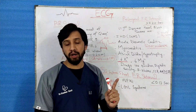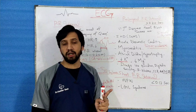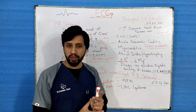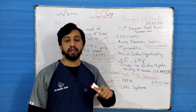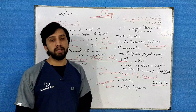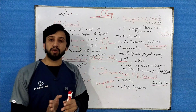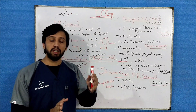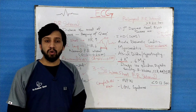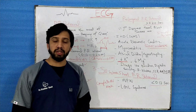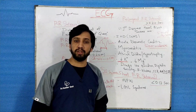To summarize, we discussed the PR interval, its normal duration, and its abnormalities including prolonged, short, and variable PR interval. In the next video we will discuss the major part of the ECG complex, which is the QRS complex. Hope you liked the video — thank you very much for watching, and I'll see you in the next video.